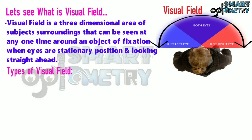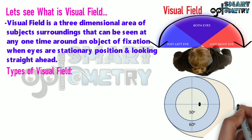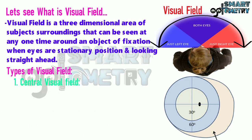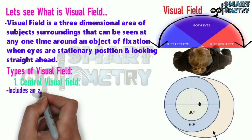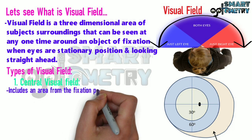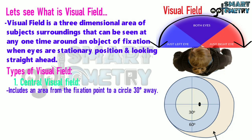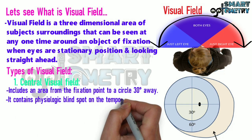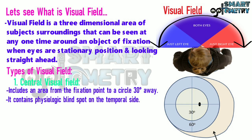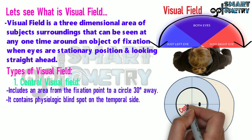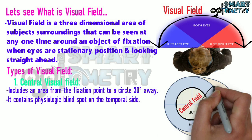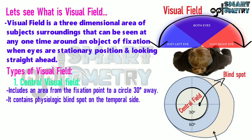Types of visual field. 1. Central visual field: it includes an area from the fixation point to a circle 30 degrees away. It contains the physiological blind spot on the temporal side. Here you can see the central visual field along with the blind spot.